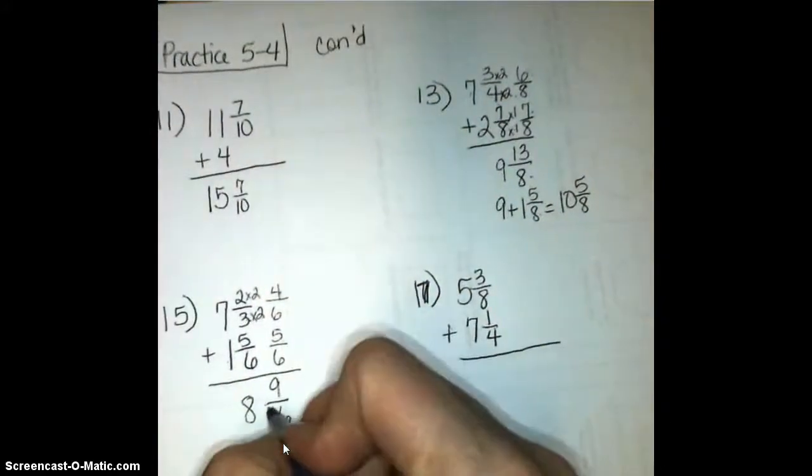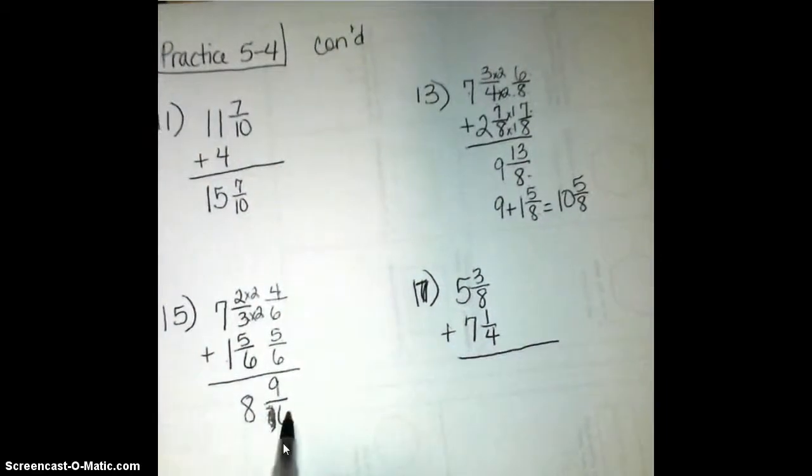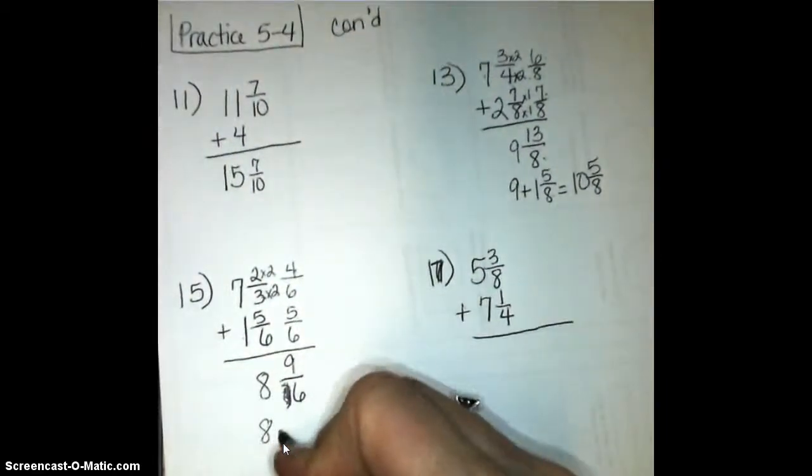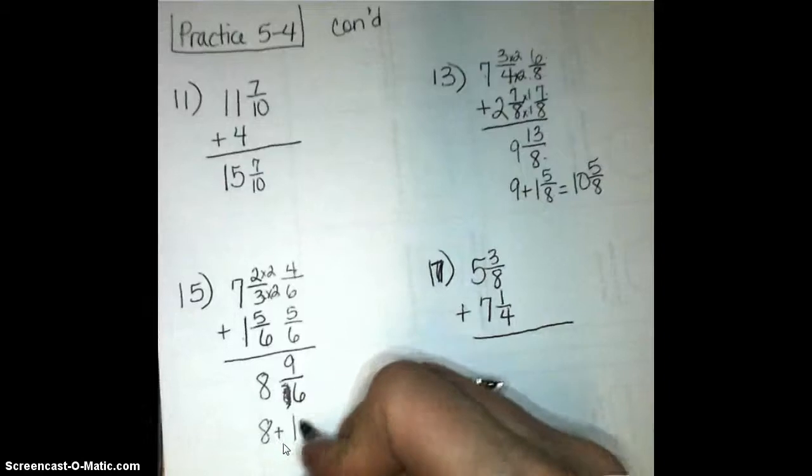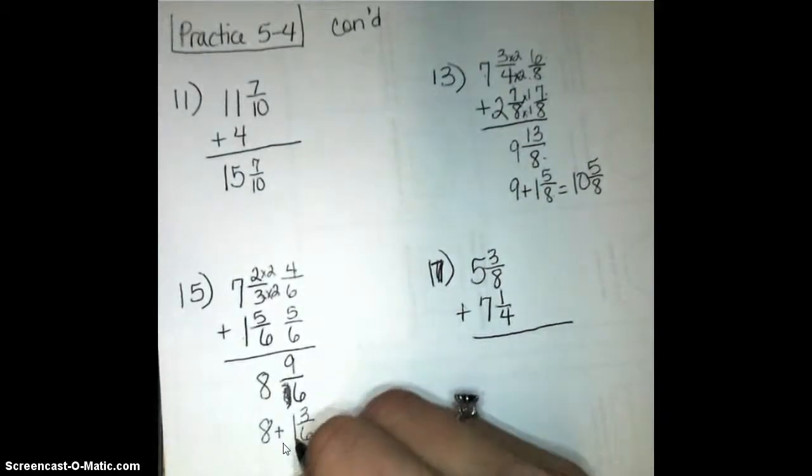So, oops, not 9 sixteenths, 9 sixths. What's wrong with 9 sixths? Hopefully, you're noticing that that's more than one whole. So we could rewrite 9 sixths as 1 and 3 sixths, because 6 sixths is this one whole.